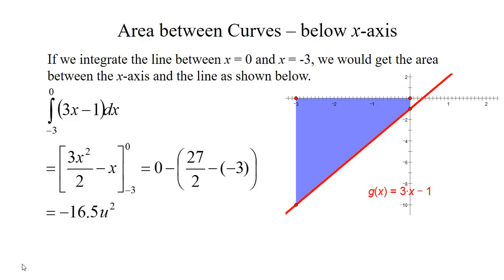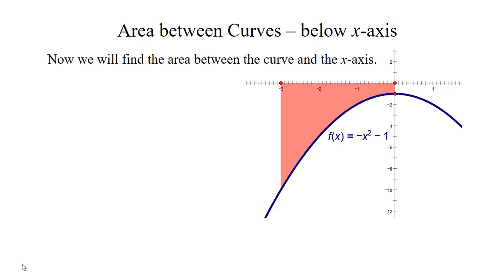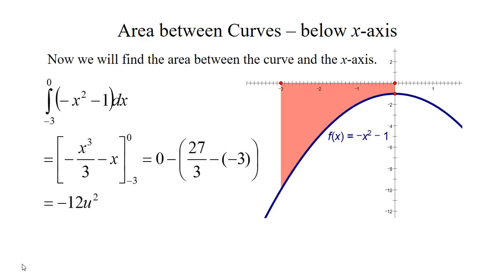Now we're going to do the same thing for the curve. For the curve we're going to find this region and it's going to be from negative 3 to 0 as well and I got that to come out to negative 12 units squared. Again the area below the x-axis is negative when you're integrating.